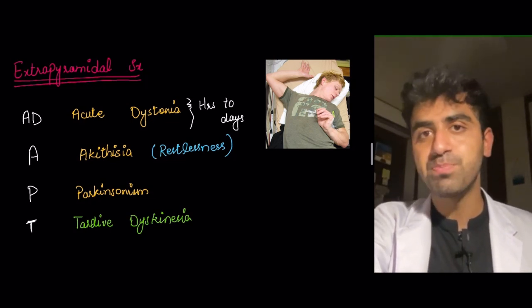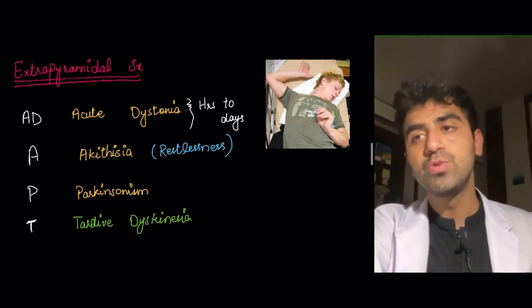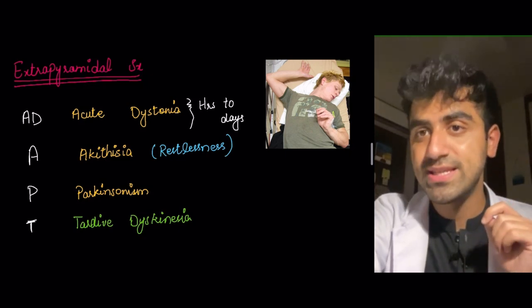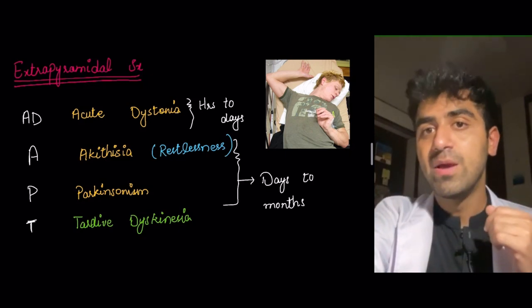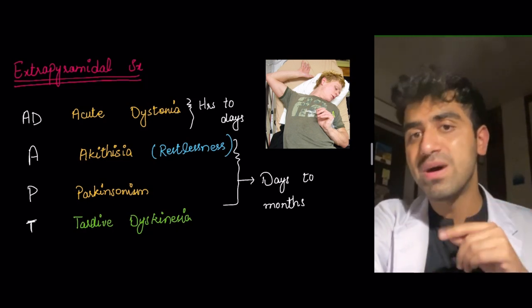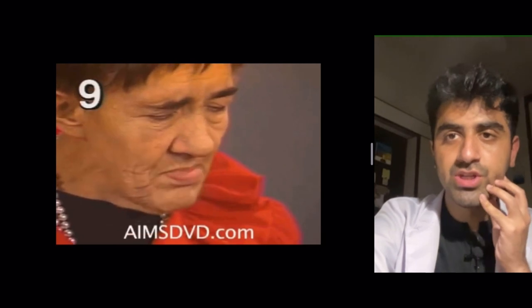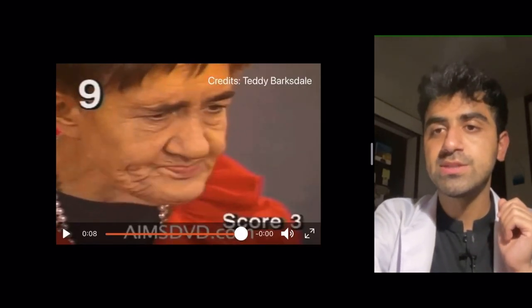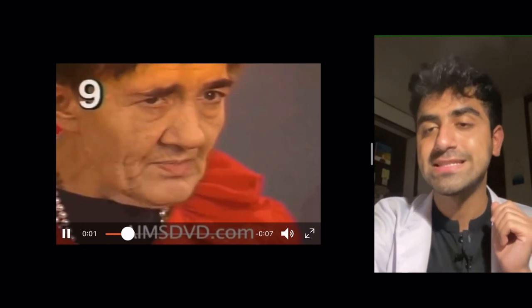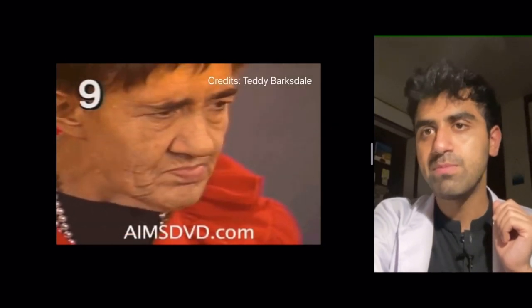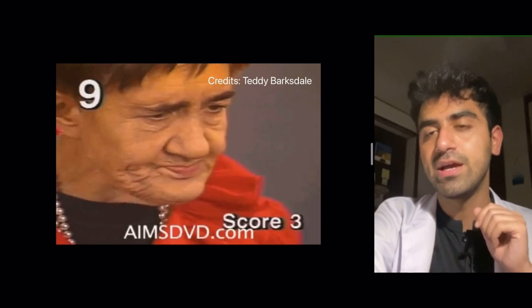The timeline is important, which is why the mnemonic ADAPT must be remembered in sequence. AD — acute dystonia — occurs in hours to days. AP — akathisia and parkinsonism — starts from days to months. T — tardive dyskinesia — occurs from months to years. There's a video example of a lady with involuntary movements of her mandible and jaw — those are involuntary movements, an example of tardive dyskinesia.